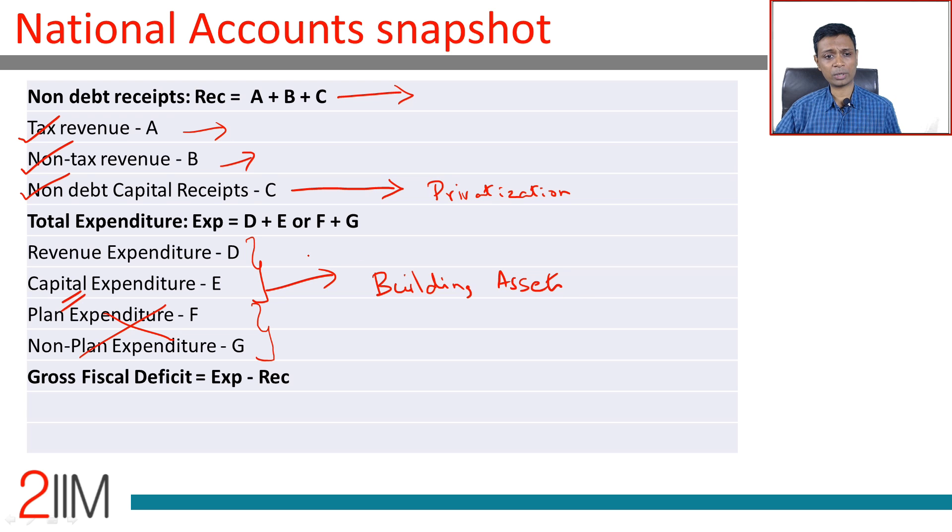What is revenue expenditure? Let's just keep the lights on. You keep the lights on, you make sure that regular business continues - salaries, rental, electricity bill, all of that. Building bridges, factories, dams, roads, railways - all of those will come under capital expenditure.